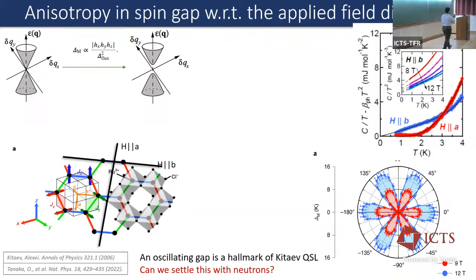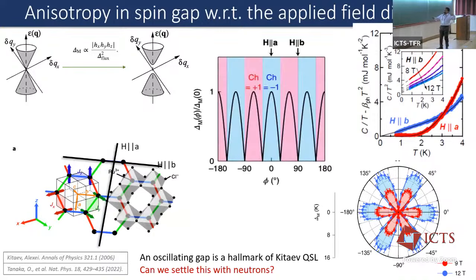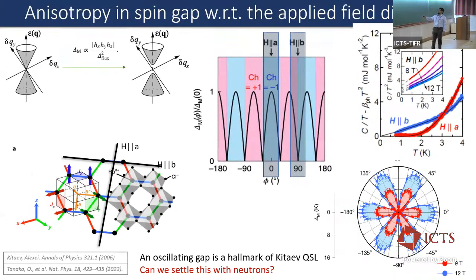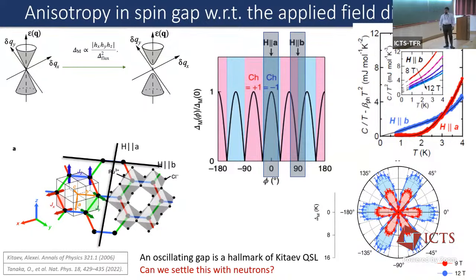They summarized that behavior in a plot where for Chern number −1 you see a gap, for Chern number +1 you also see a gap, but at the transition where the Chern number is zero you don't see a gap — published in Nature Physics, and that's a hallmark of the Kitaev QSL. The question then is: can we settle this with neutrons?